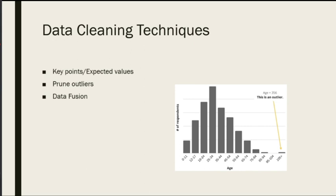Let's start with data cleaning. The easiest kind of data cleaning technique is using key points or expected values. If you're taking a survey and you only want data from people who got the COVID vaccine, one of your questions would be 'have you had the COVID vaccine?' — and if their answer is no, they don't fit your expected value and you can throw out that entire survey. This reduces a lot of work and tells us when we're looking at dirty data we don't care about.